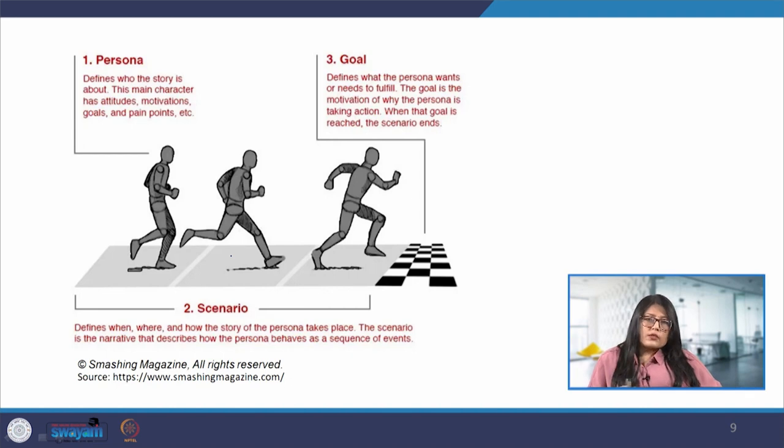Now based on Ramesh's persona and the scenario, we can identify his user goals. One of the goals can be track the workouts. Ramesh wants to easily log his workouts including the time taken in the exercise, the intensity and other factors. He expects the app to be simple and intuitive and which probably can also record his workouts. The second goal can be access the exercise routine. Ramesh is interested in having access to a variety of exercise routines which are specifically tailored for his requirements and his preferences. He wants the app to recommend workout plans based on his goals that he sees for himself, whether it is his weight loss, muscle gain, or overall fitness.